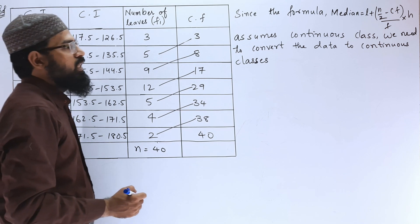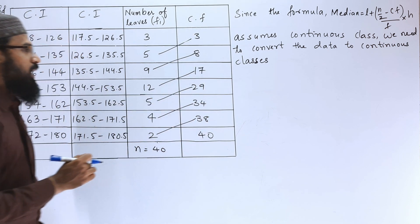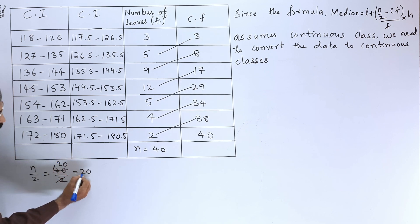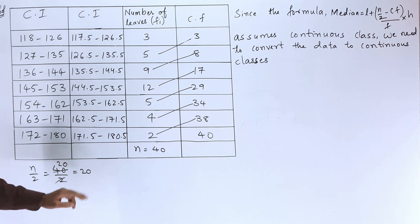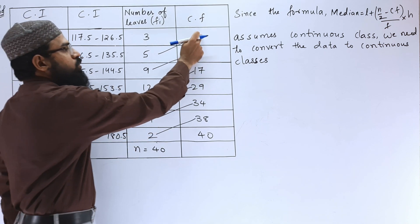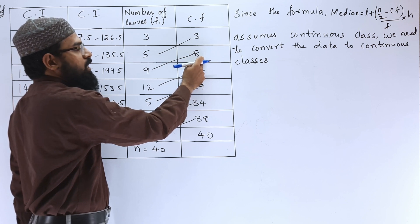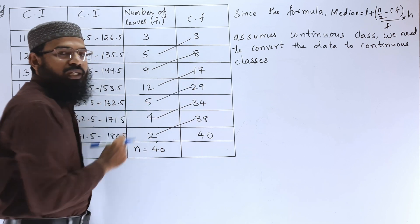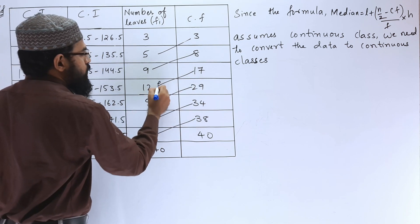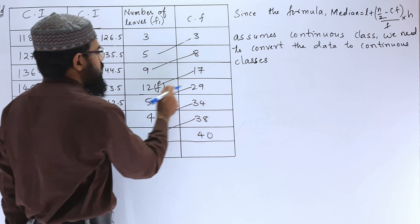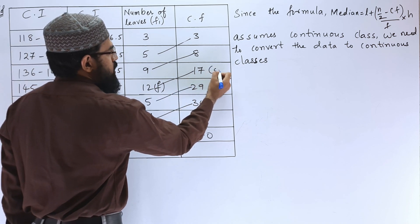Next after finding the cumulative frequency, we have to find N by 2. Here N is 40, so 40 by 2 is 20. We have to check in the cumulative frequency column where we are going to get 20. Is it coming under 3? No. Is it coming under 8? No. Is it coming under 17? No. Is the 20 coming under 29? Yes.